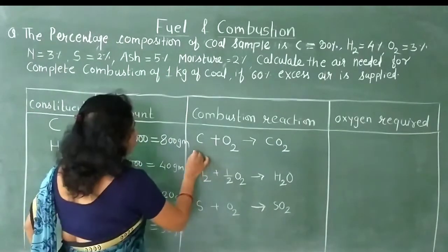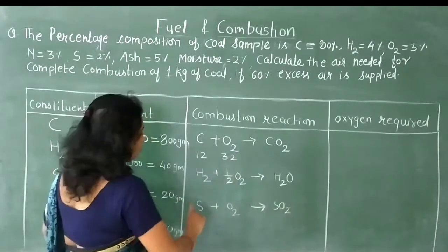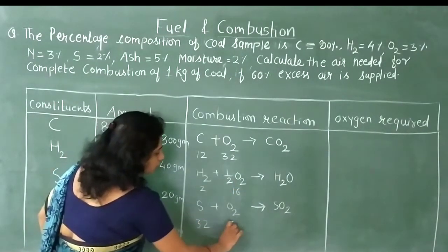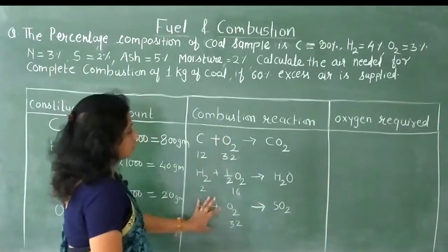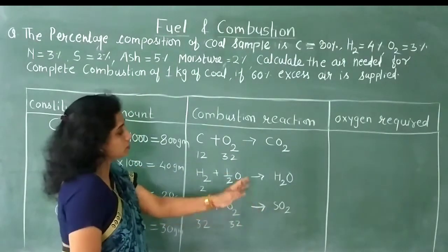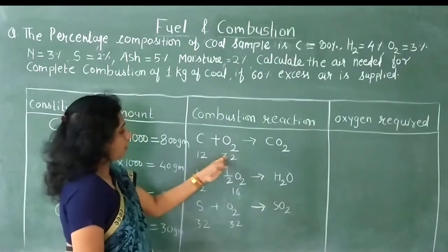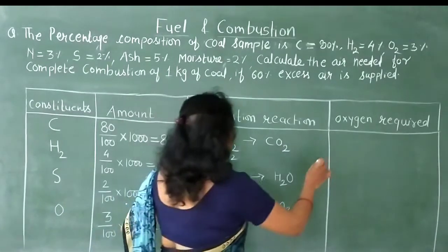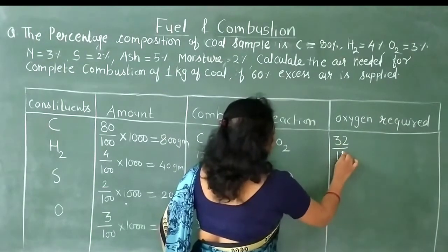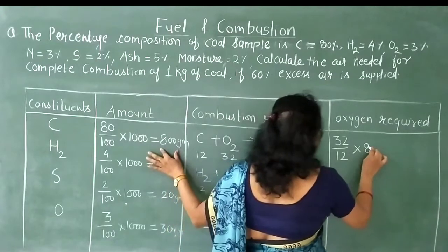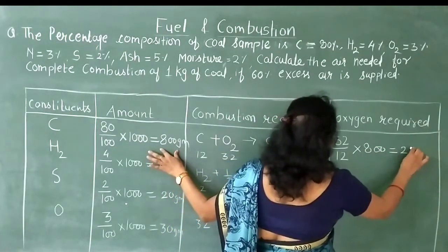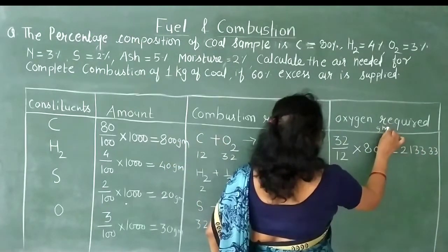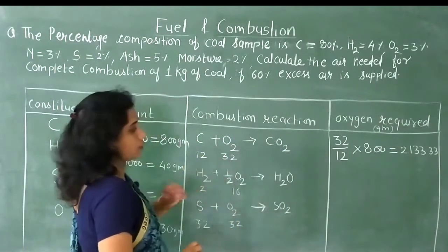Now we write the atomic masses: Carbon = 12, Oxygen = 32, Hydrogen = 2, Sulfur = 32. To find oxygen required for Carbon: (32/12) × 800 = 2133.33 g. For Hydrogen: the multiplication factor is (16/2), and the amount is 40 g, so (16/2) × 40 = 320 g. All answers are in grams because we are taking amounts and weights in grams.